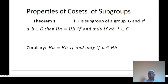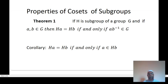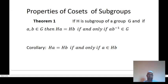Since G is a group, for every element that belongs to G. Similarly, we can prove on the same line: if H is a subgroup of a group G and if A, B belong to G, then AH equal to BH if and only if A⁻¹B belongs to H.